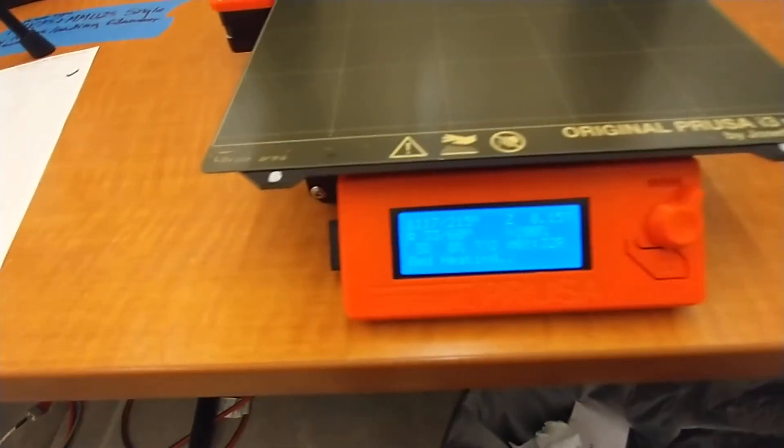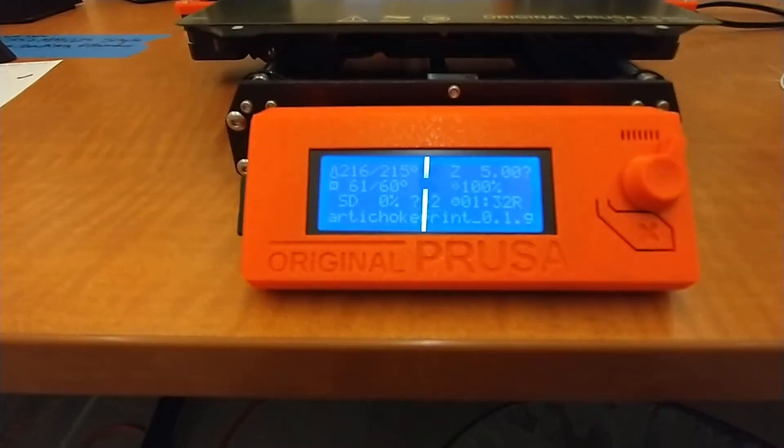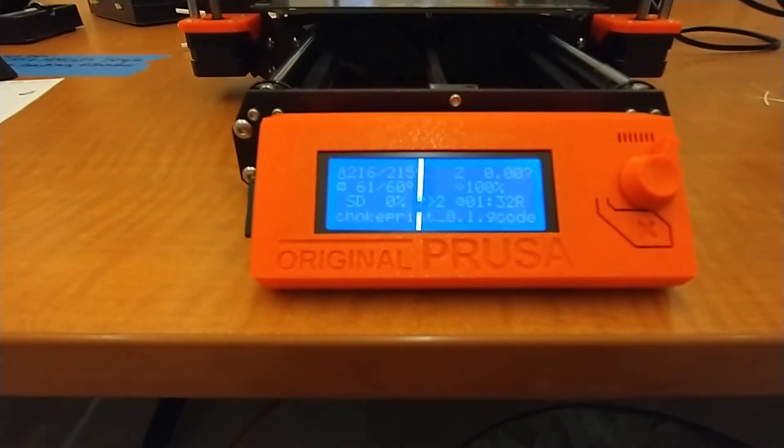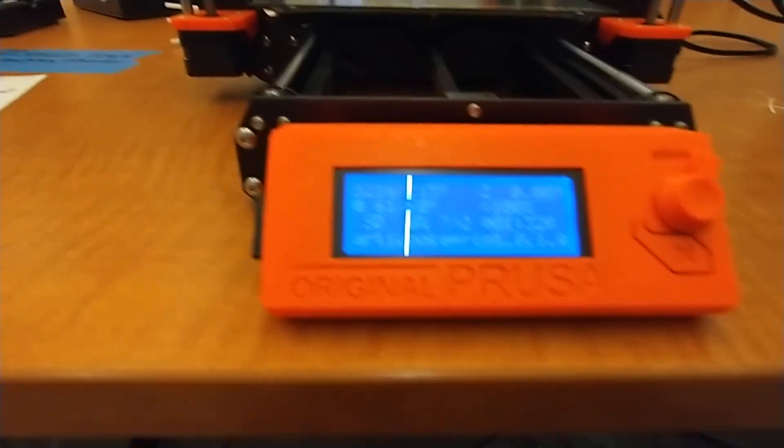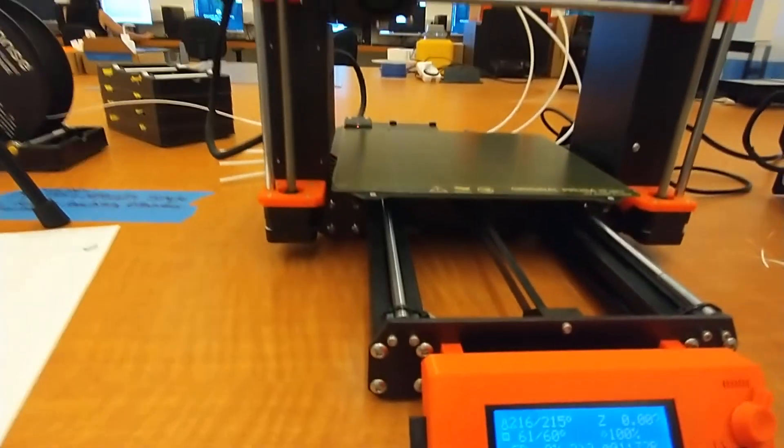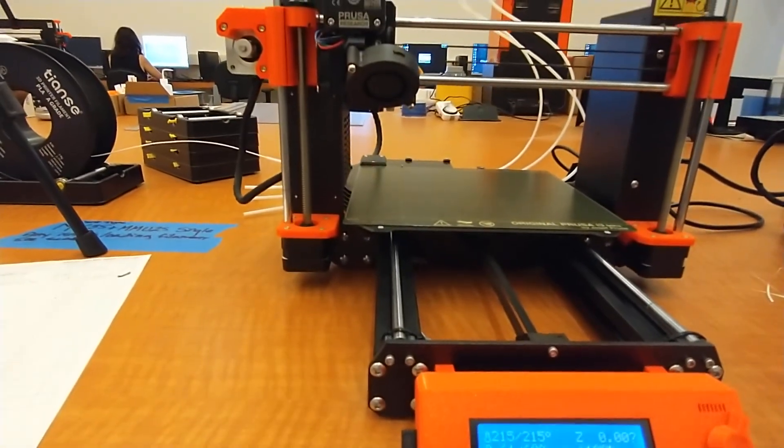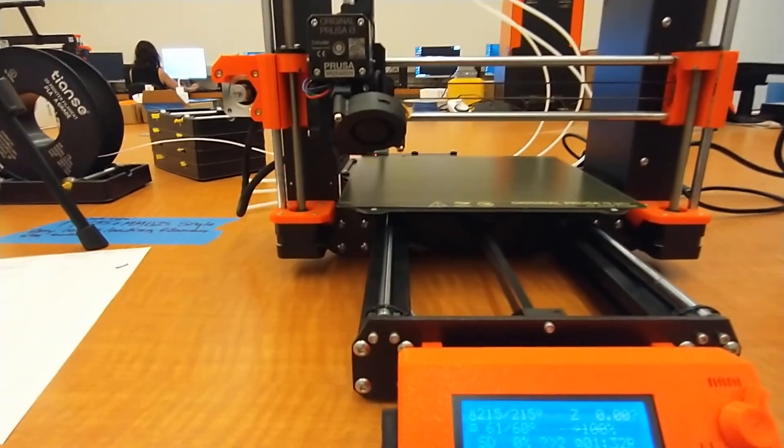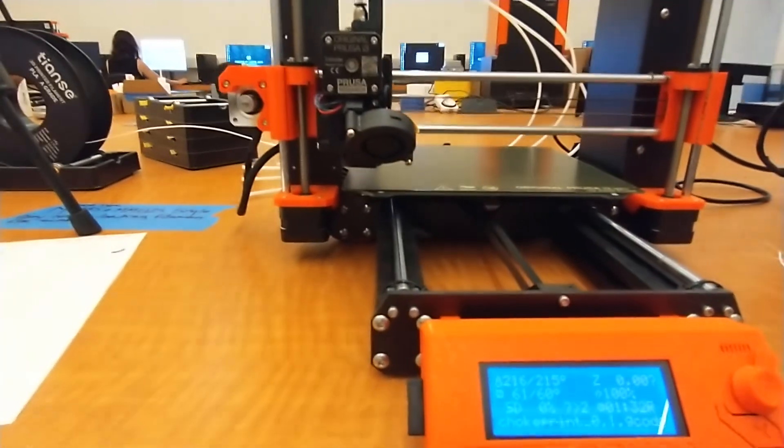We're heating up to temperature. Once our temperatures are up to the PLA set points, our printer is going to come down and go through the same motions as usual: leveling the bed, priming the nozzle, and then printing your object.